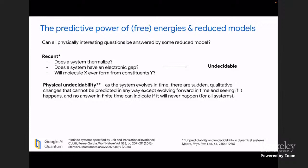And what that says is that physical undecidability, and I'm paraphrasing a bit, as a system evolves forward in time, there are sudden qualitative changes that cannot be predicted in any way except evolving it forward in time and seeing if it happens. And no answer in finite time can indicate that it will never happen. So, something happening here would be like the halting of a halting problem. And so, you can say, okay, well, we already have hard enough time relating finite complexity theory results. Why are we going to bring in this kind of undecidability questions?